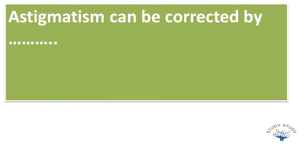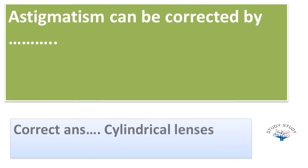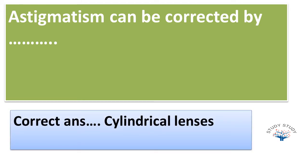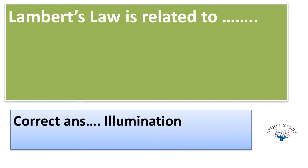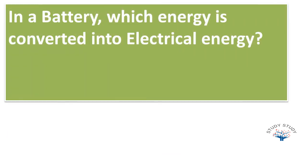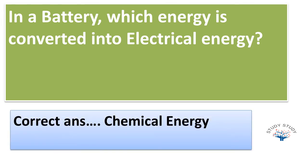Next, astigmatism can be corrected by - the correct answer is cylindrical lens. Next, what device is used to break or complete an electronic circuit? The correct answer is switch. Next, in a battery which energy is converted into electrical energy? The correct answer is chemical energy.